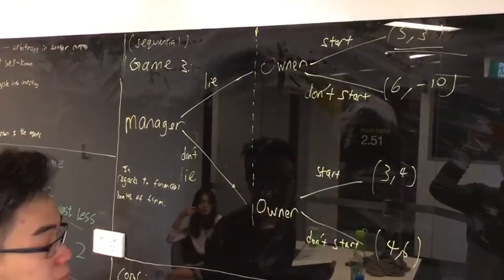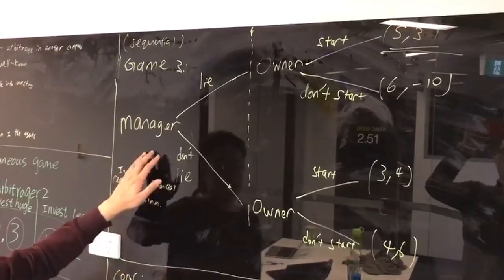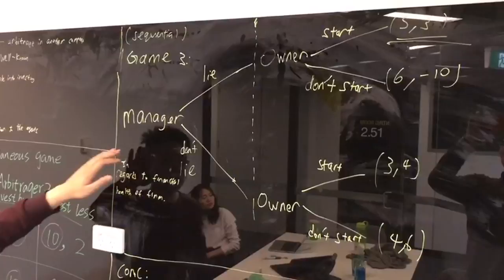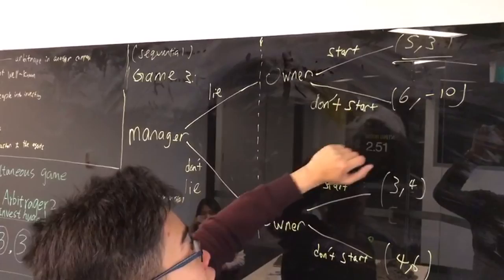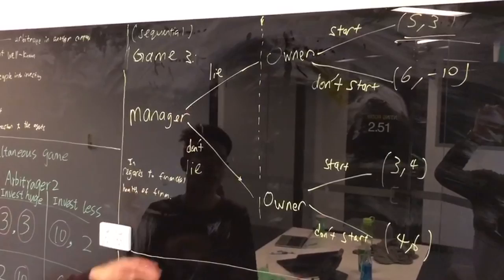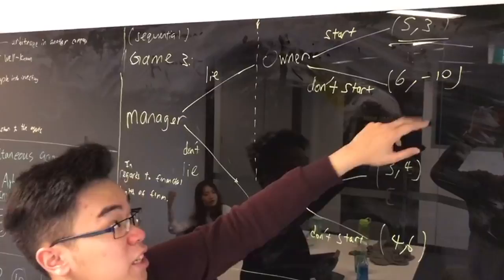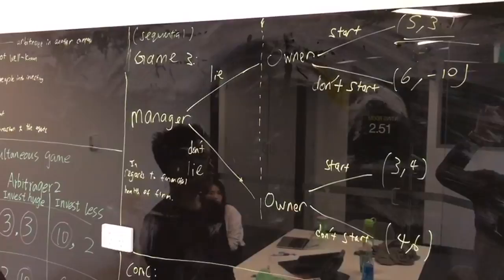As I said before, it is a sequential move game. In this case, the managers get to start first and there is this informational constraint here. The owners don't know what the managers decide at that point of time. In this case, the managers, they got an incentive to lie over here as seen. They get a higher payoff. That's why their dominant strategy is to just lie. And after that, the owners would find out that they have lied. They are left with the choice of whether to start a Ponzi scheme, which would get a payoff of 3, or don't start, which would get a payoff of negative 10. Of course, they would start a Ponzi scheme and try to cut the losses of the company.